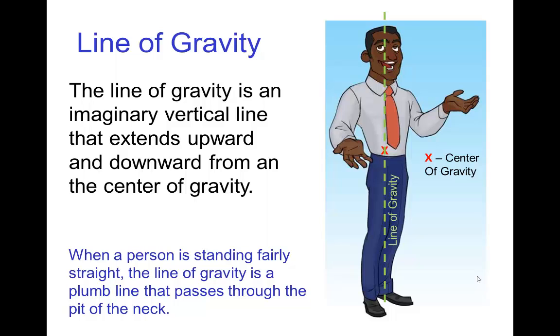This is perhaps also known as a plumb line. So the line of gravity for this character standing fairly straight, well if the center of gravity is located roughly here, then the line of gravity goes up and down. So you see it would travel somewhat through the center of the head, down the center of the body, so on down.